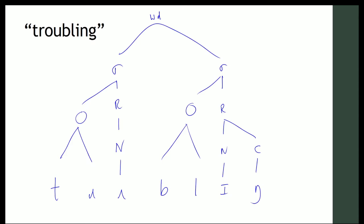If you were to do troubling with three syllables, what you would have is another syllable, rhyme, nucleus, and then we'd end up with another onset there. So two trees for that.